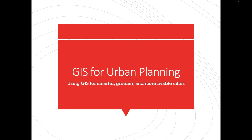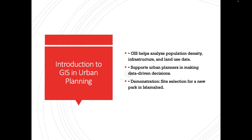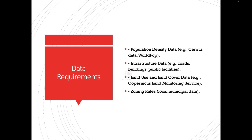What is GIS in urban planning? A geographic information system, or GIS, is a vital tool for urban planners. From analyzing population density to understanding infrastructure networks and land use, GIS helps optimize space and resources in cities. Today we will demonstrate how to use GIS to identify the best location for a new park in Islamabad sector E11, focusing on population, infrastructure, and existing land use data.